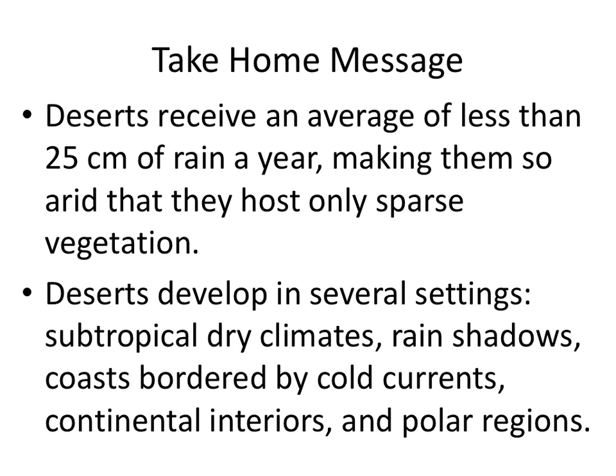So let's recap. Deserts receive an average of less than 25 centimeters of rain each year — remember, that's less than 325 centimeters of snow when talking about cold deserts. Therefore, vegetation is sparse, with less than 15% of the region having vegetation. Deserts develop in various settings: the subtropical desert, the rain shadow, the coastal, the continental interior, and the polar region. Make sure you've turned in your vocabulary, and I hope you have a fantastic three-day weekend. I look forward to seeing you on Monday — take care.